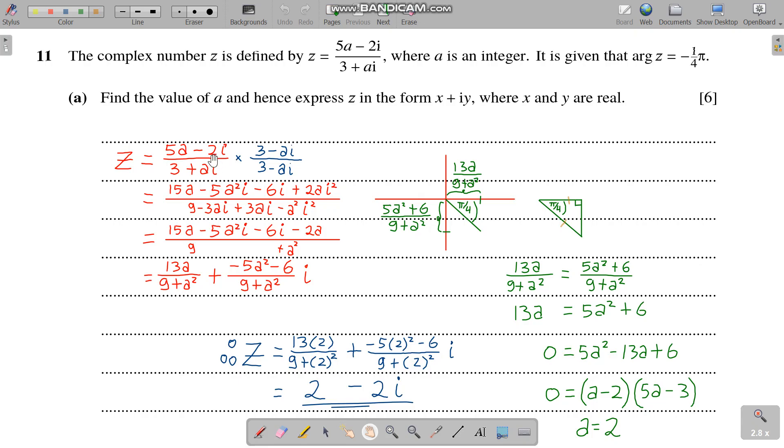Complex conjugate means similar to this denominator but instead of plus we use minus. We use the opposite sign - if it's minus we use plus, if it's plus we use minus. That's complex conjugate.